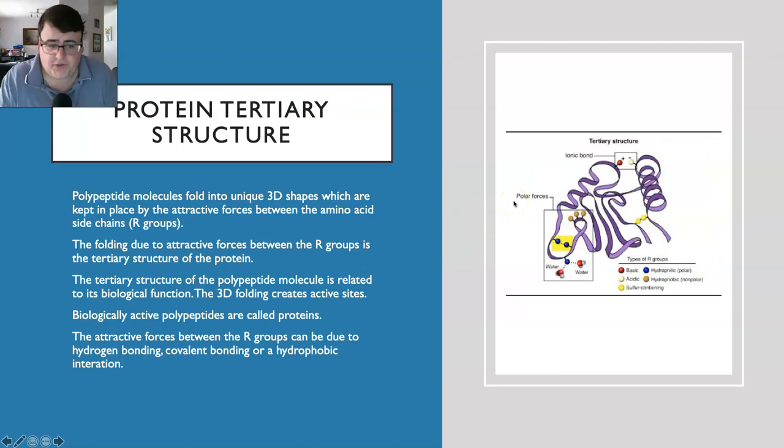We then have the tertiary structure, which is the 3D shape of the protein itself. This tertiary structure is formed by the attractive forces between the amino acid side chains. Those side chains we call R groups, and the folding that occurs because of attractive forces between those R groups determines the tertiary structure. The tertiary structure is related to its biological function - the tertiary structure and what active sites it creates will determine how this protein works. The attractive forces between R groups could be hydrogen bonding, covalent bonding, or hydrophobic interactions.